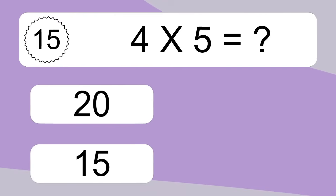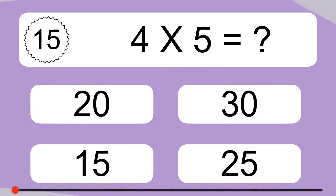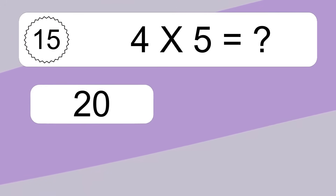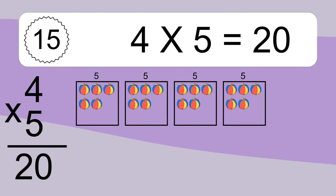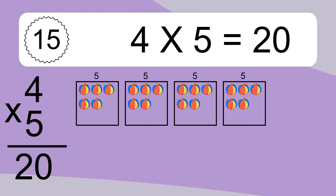4 times 5 equals what? 4 times 5 equals 20. We have 4 boxes, and each box has 5 colorful balls inside. If you count all the balls in all the boxes together, you will have 4 times 5 balls. This equals 20 balls.